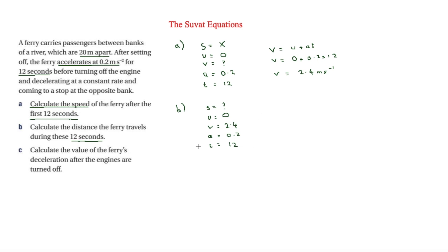Since we've just worked out V, we avoid using it in case of an earlier mistake. So we use S equals UT plus half AT squared: S equals 0 times 12 plus half times 0.2 times 12 squared. Putting that in the calculator, the distance the ferry travels in 12 seconds equals 14.4 metres.